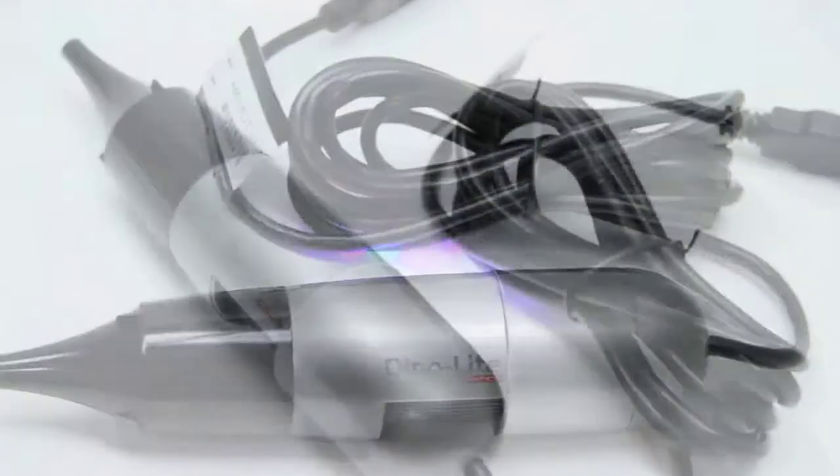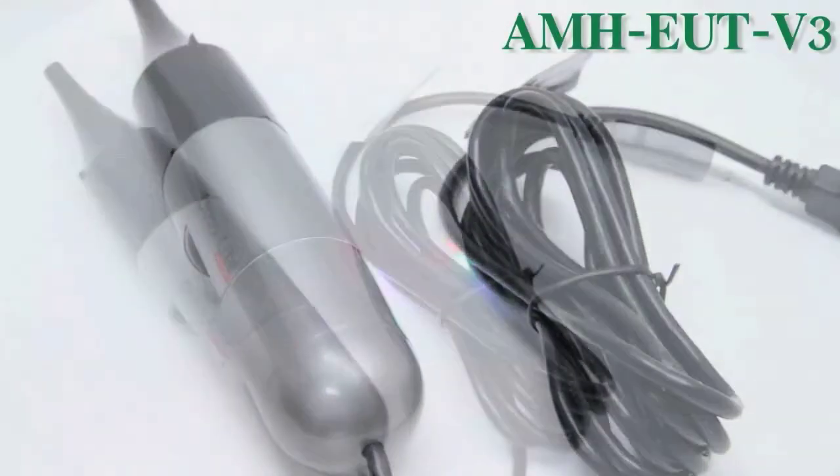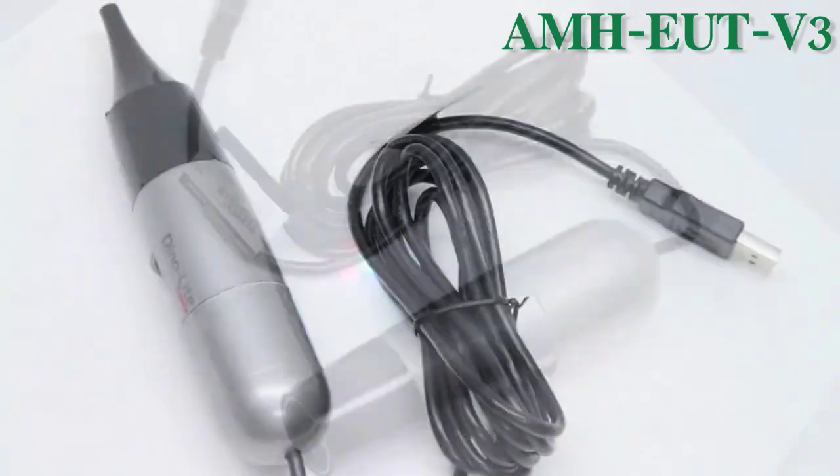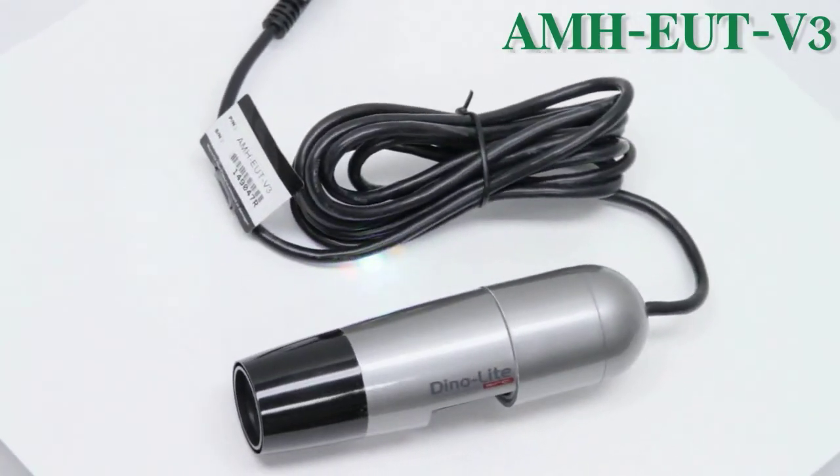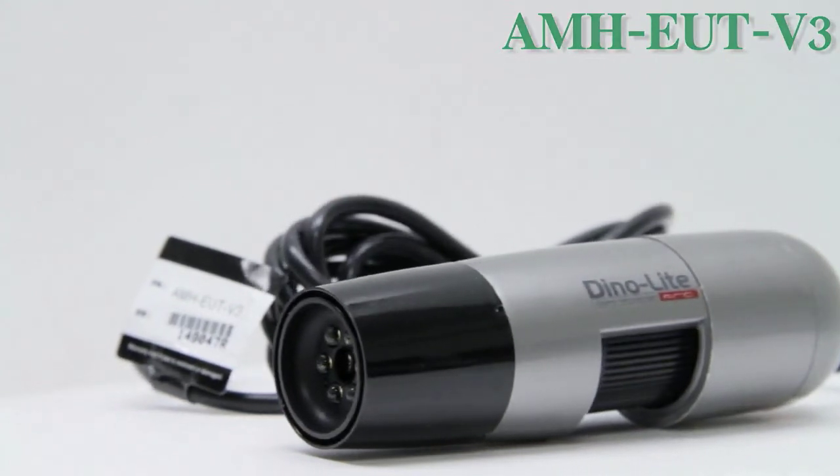Introducing the AMH EUT V3 Ear Scope. This scope features up to 30 frames per second, a 1.3 megapixel camera, as well as 10 to 92 times the optical zoom.